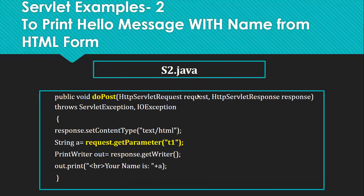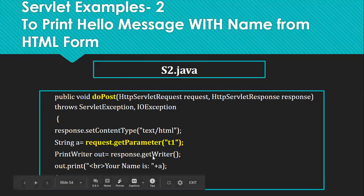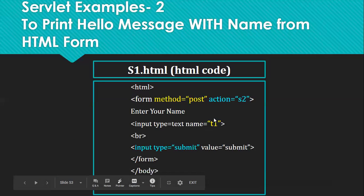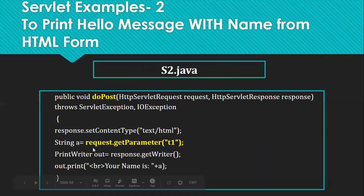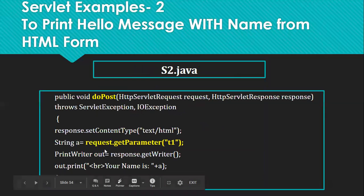Since we used the POST method in the HTML form, in S2 we need to implement the doPost method. We create the two mandatory objects: response.setContentType and PrintWriter out = response.getWriter. The text box has the name T1, so to read the text box value from the client we use request.getParameter.